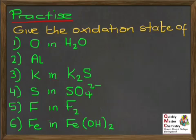OK, let's look at the answers. For oxygen in water, that's going to be an oxidation state of minus two. We said that oxygen in a compound always has an oxidation state of minus two. Aluminium, well, that's just an unreacted element, and we said that's always going to have oxidation state zero.